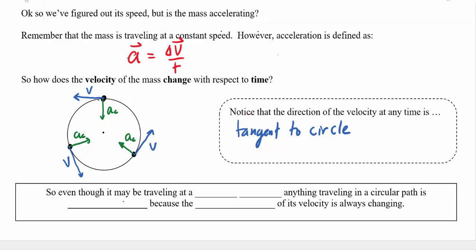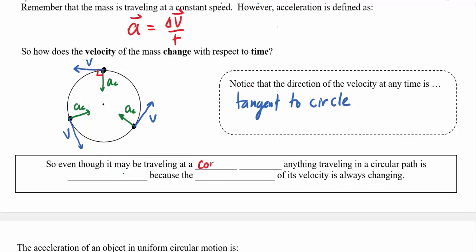The velocity and acceleration are perpendicular to each other. Perpendicular vectors are independent, so the acceleration can change the direction of the velocity but not its magnitude — meaning it changes which way the arrow points but not the speed. So even at constant speed, anything traveling a circular path is accelerating because the direction of velocity is constantly changing.